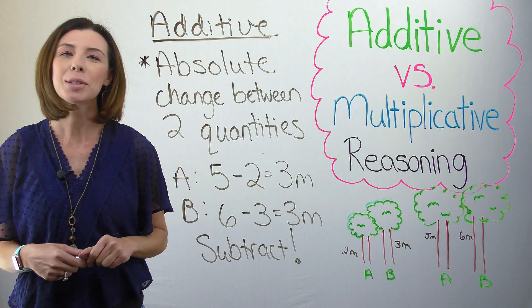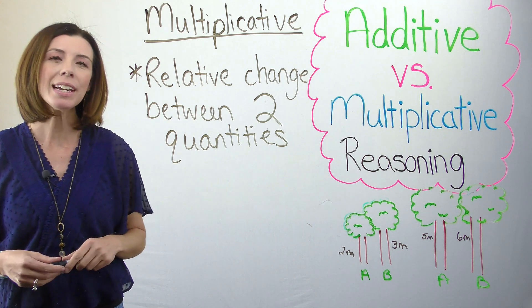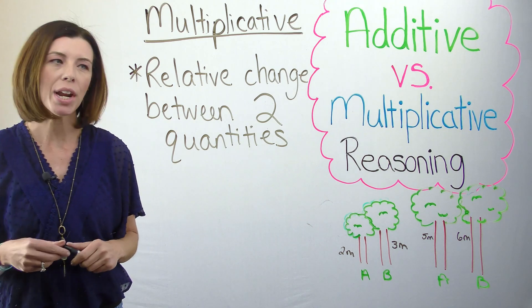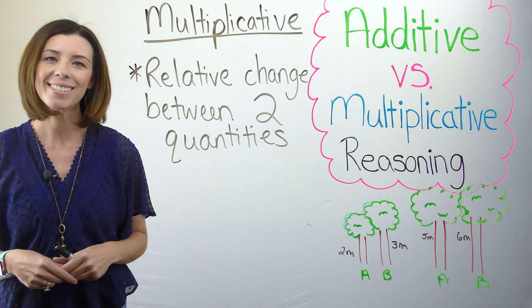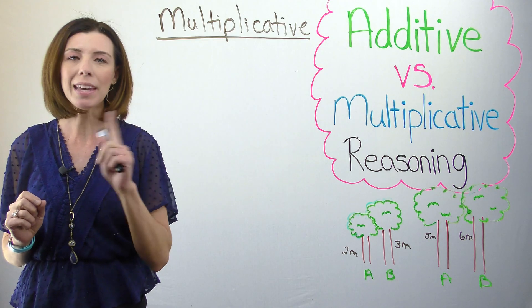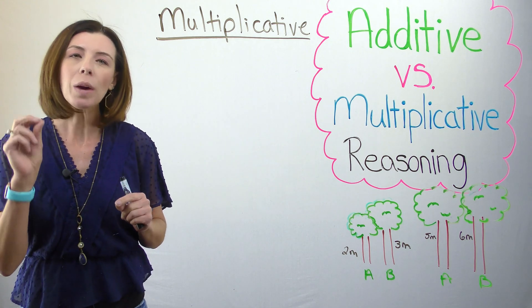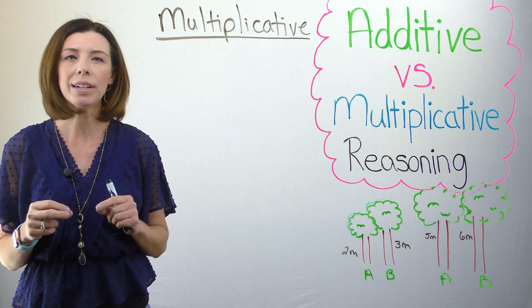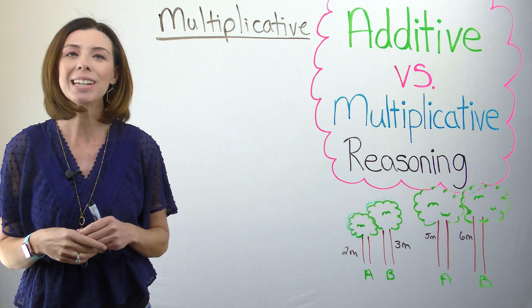Now let's look at multiplicative reasoning. When I'm thinking about multiplicative reasoning, I'm thinking about the relative change between two quantities. With multiplicative reasoning, we're looking at the relative change, not the absolute change like additive reasoning. So the relative change between two quantities. We're going to compare these using division.